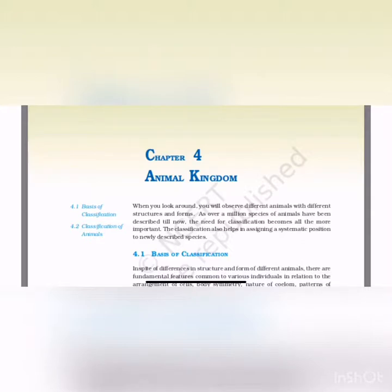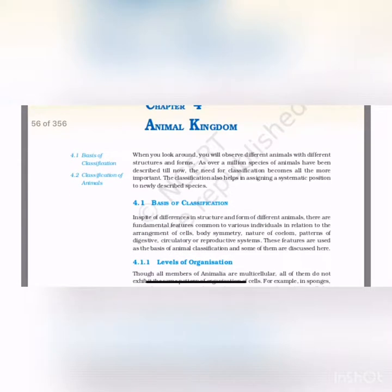First we are going to see about Animal Kingdom. When you look around, you will observe different animals with different structures and forms. Over a million species of animals have been described till now. The need for classification becomes all the more important. Classification also helps in assigning a systematic position to a newly described species — where we have to keep the species.